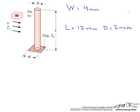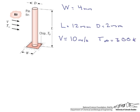We have atmospheric air with velocity of 10 meters per second. T infinity is 300 K and it is in cross flow over the pin. The surface of the chip and therefore the base of the pin are maintained at T sub B equals 350 K.